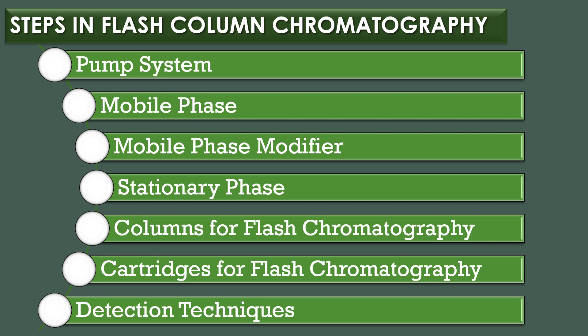There are seven steps in flash column chromatography: pump system, mobile phase, mobile phase modifier, stationary phase, column for flash chromatography, cartridges for flash chromatography, and finally detection techniques.